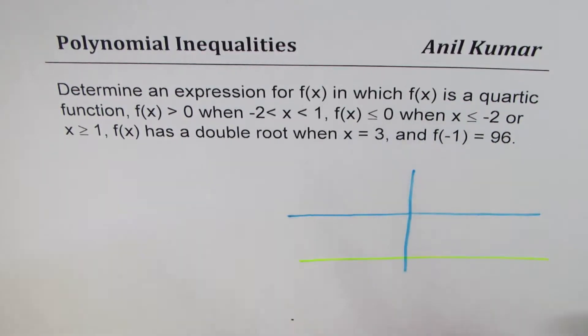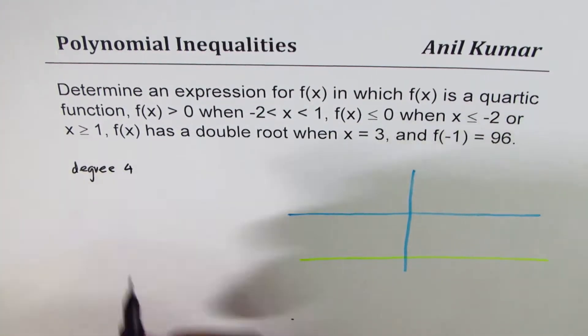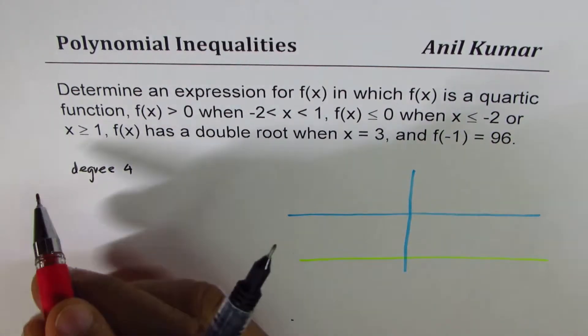So, we have quartic function. So, that means degree 4. So, let's write down what we have, degree 4, quartic function. Correct? This is first thing we have understood.